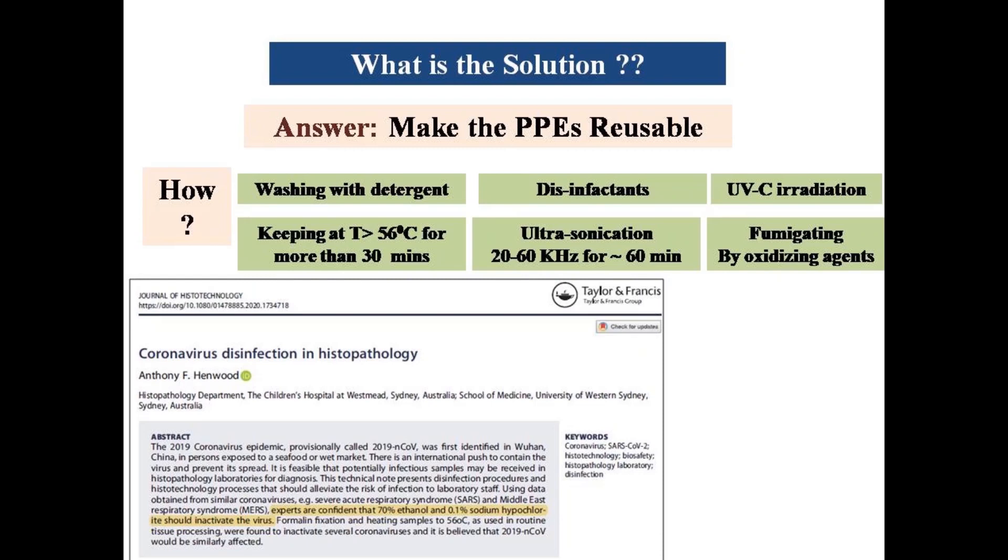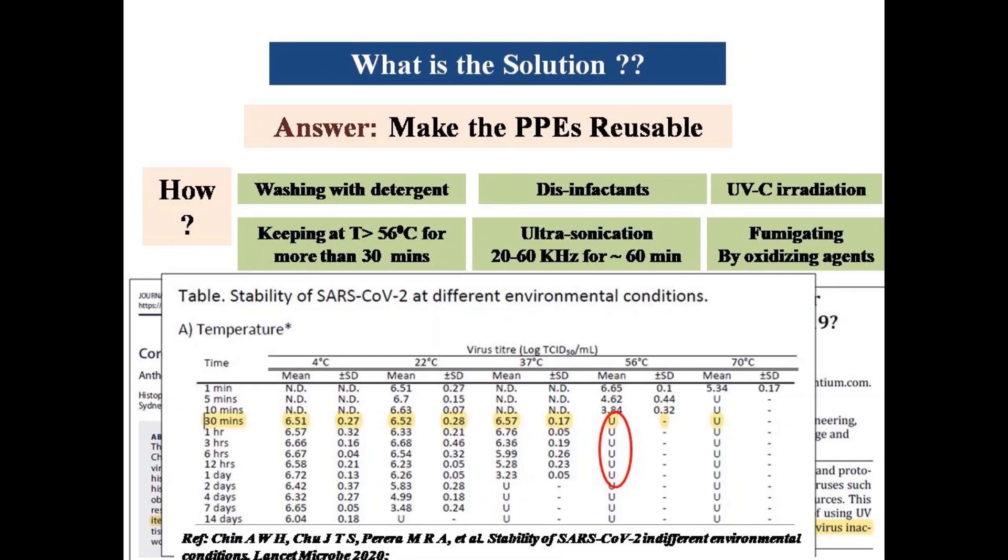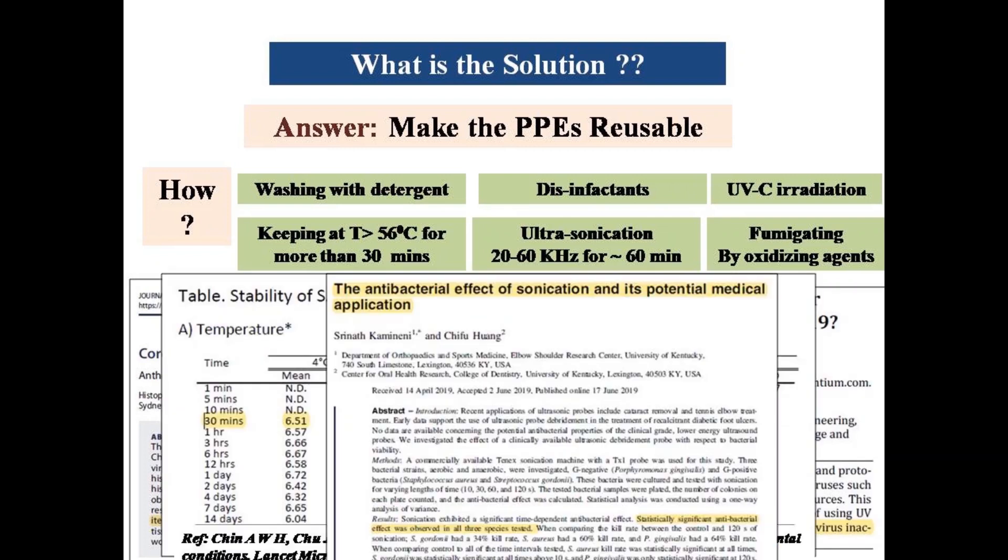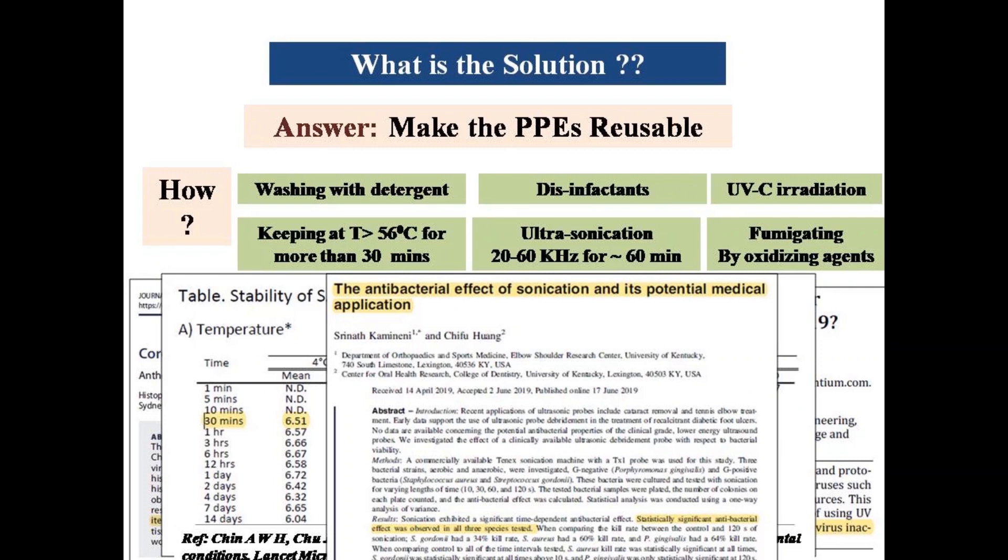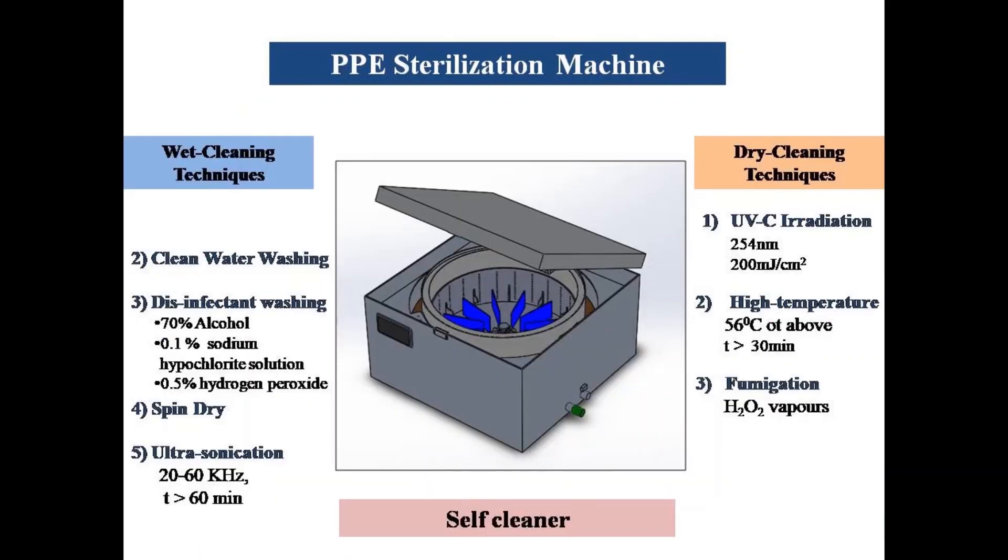Various reports have suggested that treating these protective gears with detergent, clean water, disinfectant, UVC irradiation, treating at temperatures higher than 56 degrees Celsius, ultrasonication, and fumigation using various oxygen agents have been proven to be efficient against various viruses, bacteria, and fungus. These techniques are safe to sterilize the protective gears as they do not affect their efficiency and texture.